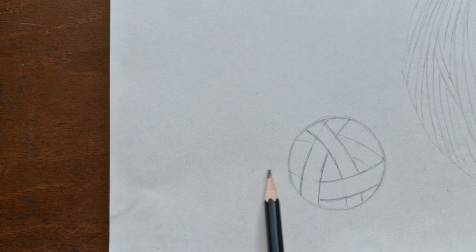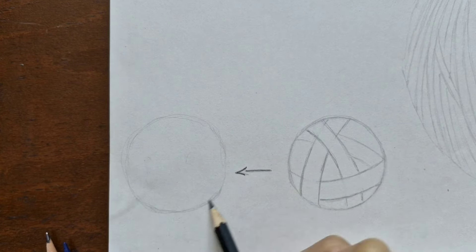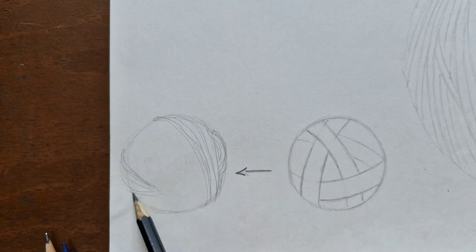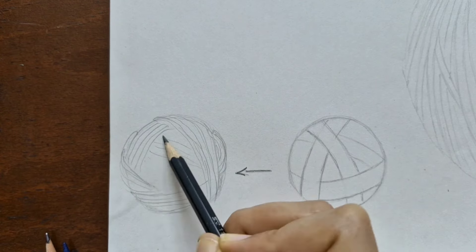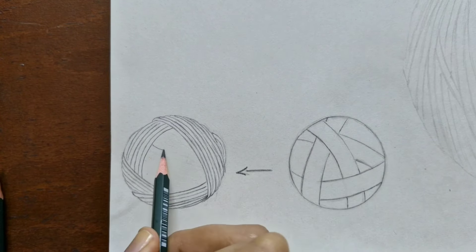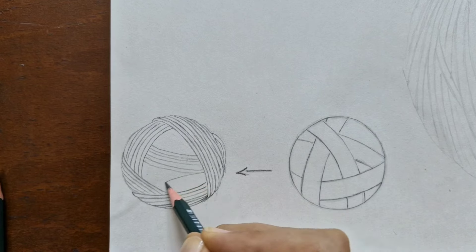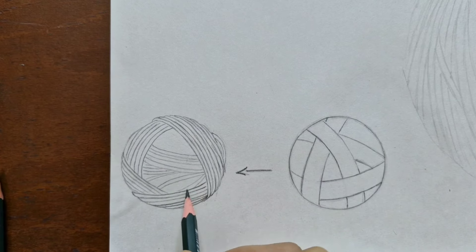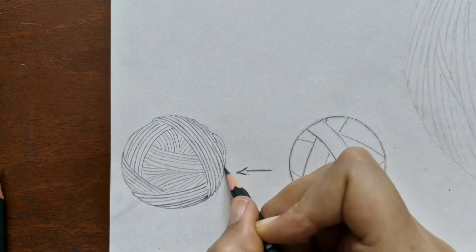After you've got those overlapping lines you can fill in any empty spaces with some parallel lines. But remember yarn isn't perfect. So don't worry about making it too neat and tidy. The initial shape you draw should be a bit random and irregular like real yarn to make it look more natural.